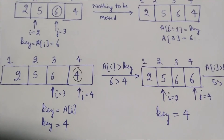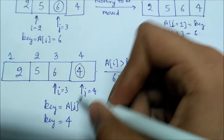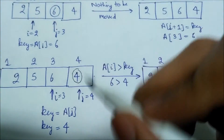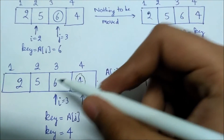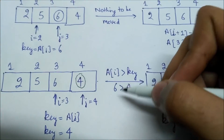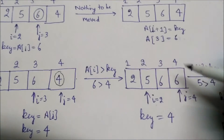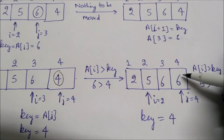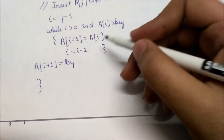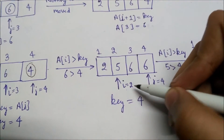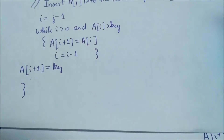Now j is incremented to four and i is j-1, which is three. The key is a[4], which is four. We check the while loop: a[i] is a[3] which is six, and six is greater than four, so we must move elements. a[i+1], that is a[4], becomes a[i] which is six. Then i is decremented to two. We check again: i=2 is greater than zero and a[2] is five, which is greater than four, so we move again.